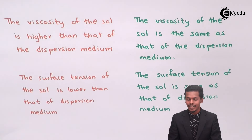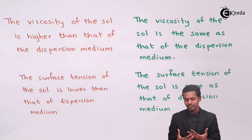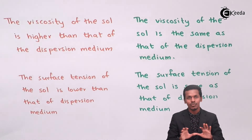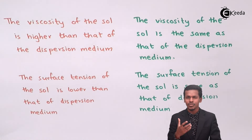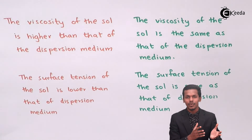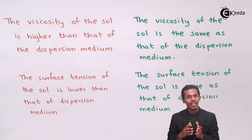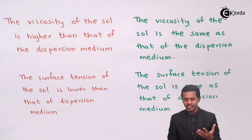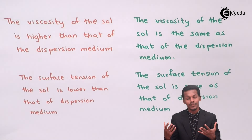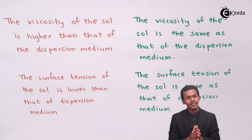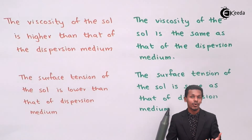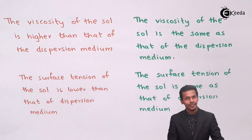Regarding surface tension: for lyophilic sols, the surface tension of the sol is lower than that of the dispersion medium. Since the dispersion medium is a continuous phase throughout the colloidal solution, the dispersed phase — which is solid in nature — will have lower surface tension compared to the dispersion medium. For lyophobic sols, the surface tension remains the same as that of the dispersion medium.